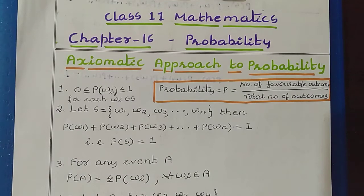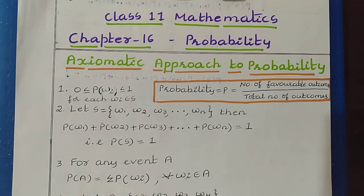Welcome to the channel NCRT Maths Tutor. In this video we are going to learn class 11 mathematics chapter 16 probability, specifically the axiomatic approach to probability. Here axioms means rules, so to solve probability problems we have certain rules, and based on those rules we can easily solve the probability problems.